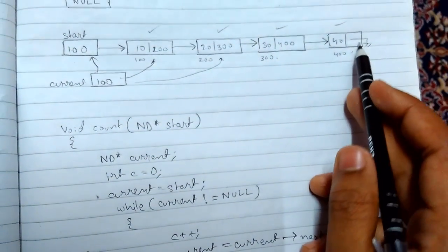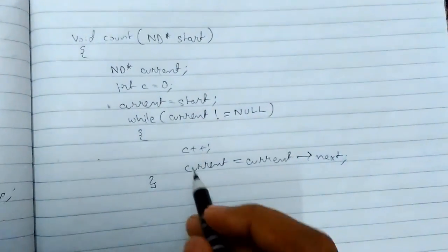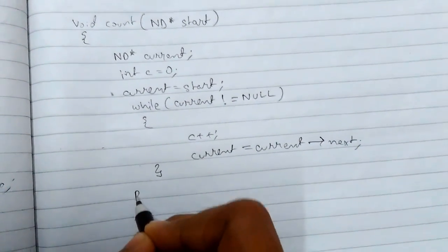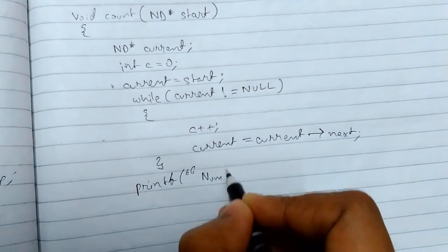When the current becomes null, we'll break out from the loop. Then we add a print statement: printf number of nodes percentage d, which prints the value of c.